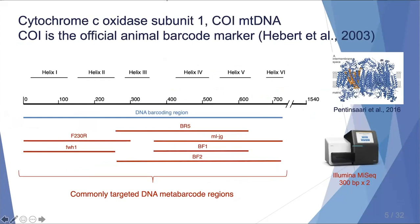CO1 is a mitochondrial gene, and the 5' end of this gene is being used as the official animal barcode marker, shown in blue. In this project, we're using CO1 metabarcoding, targeting smaller subsections of the barcoding region shown in red, and those regions are sequenced on an Illumina MiSeq platform.